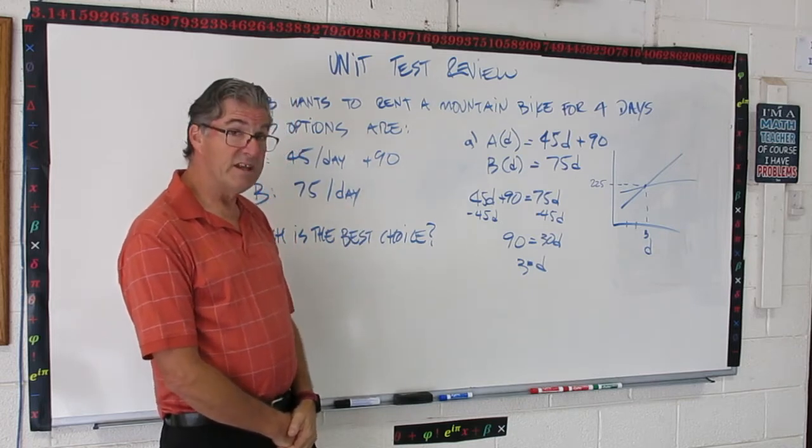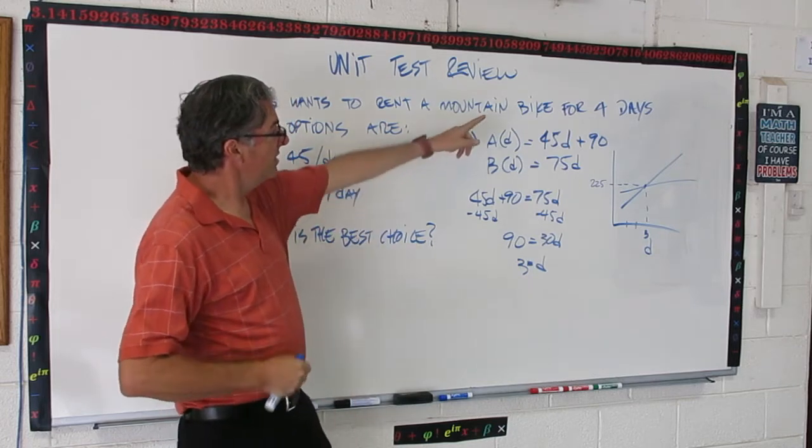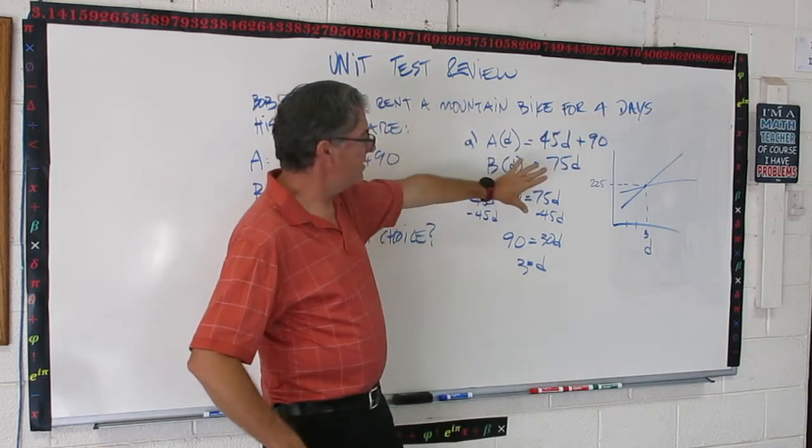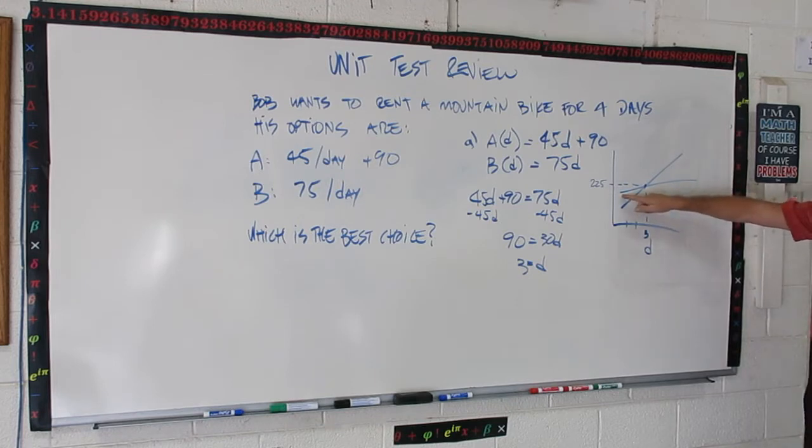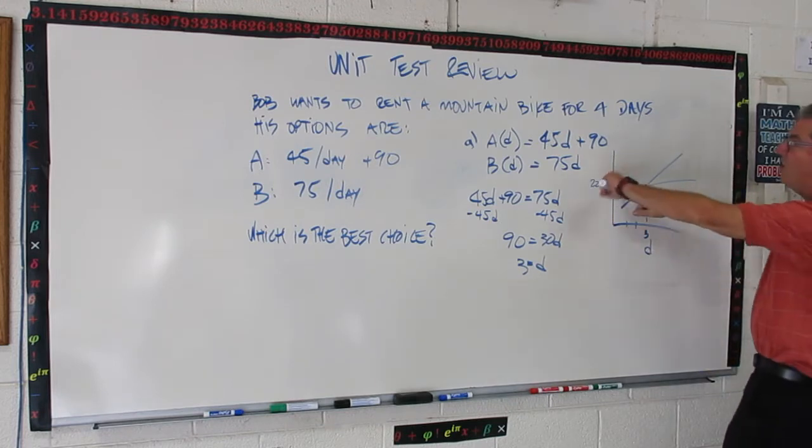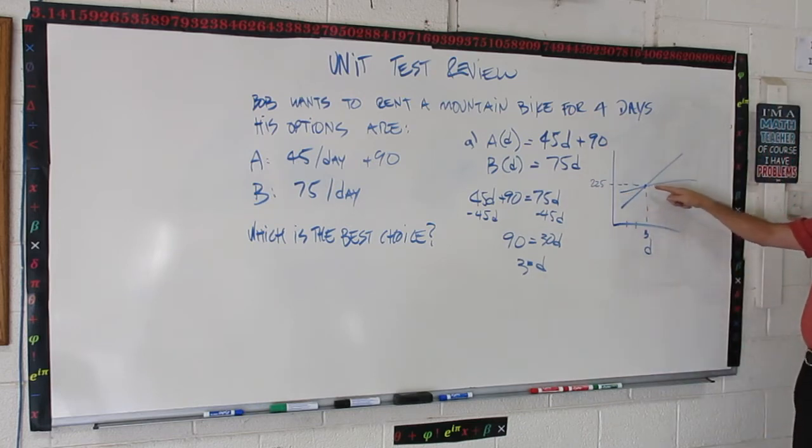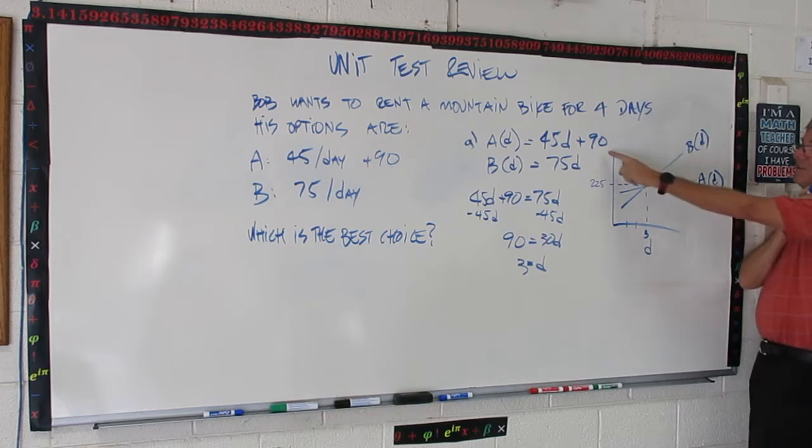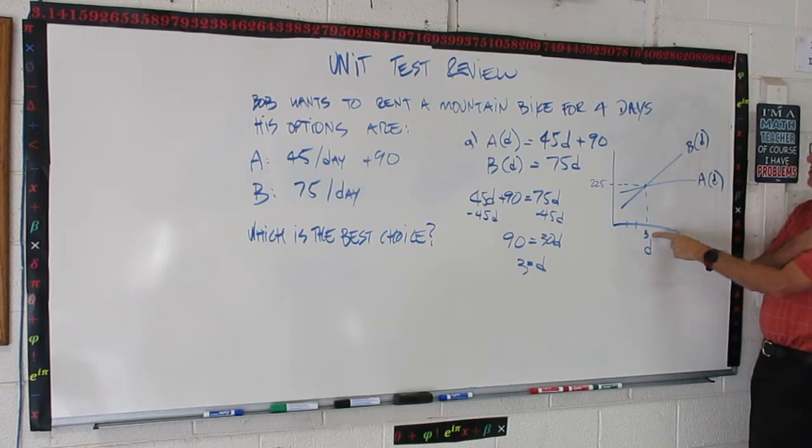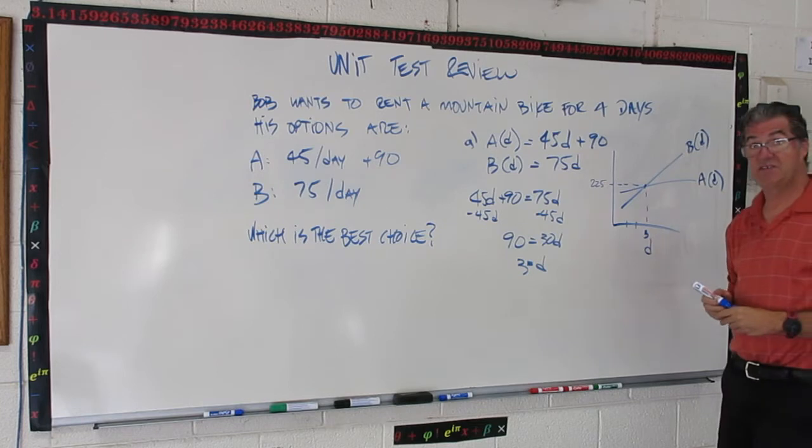So, now we need to figure out which one of these is better because he's going to rent for 4 days. So, one of these equations, what we want is we want the equation that's got this line. It starts off more expensive because it has the upfront cost right here of the 90, but eventually this gets cheaper if you do more days. So, this would be a of d, and this would be b of d. So, we know then that this one is going to be cheaper after 3 days. So, for Bob, who's going to rent for 4 days, it's function a that is his best option.